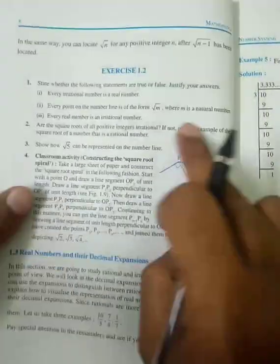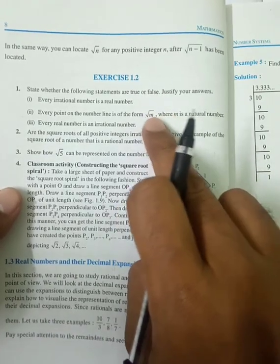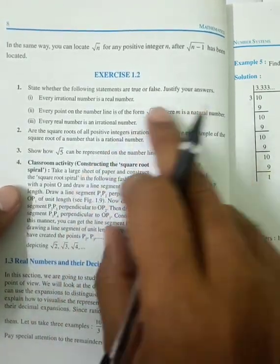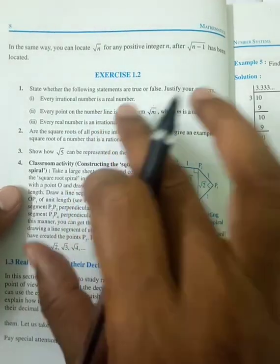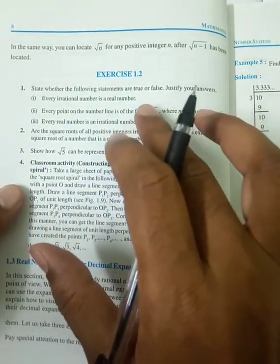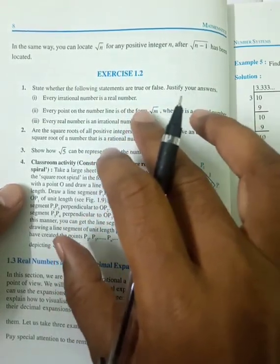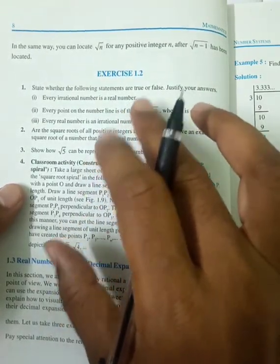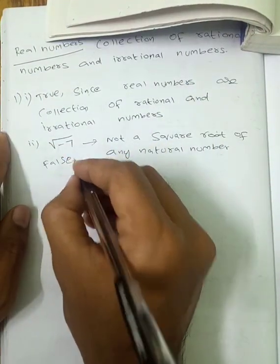Not all points on the number line are in the form √M where M is a natural number. For example, √(−3), √(−4), √(−5) — negative numbers are not square roots of natural numbers. So the answer is False.